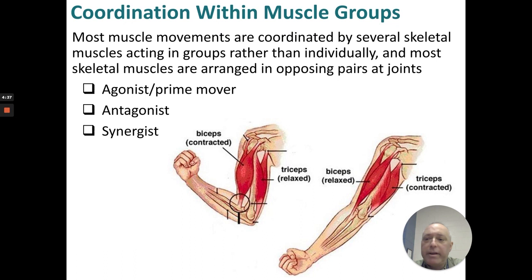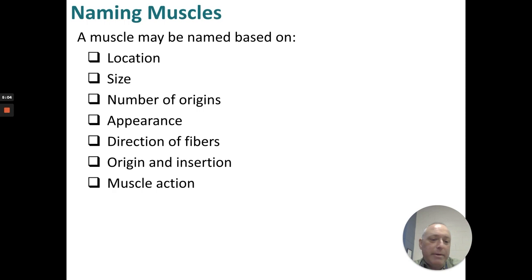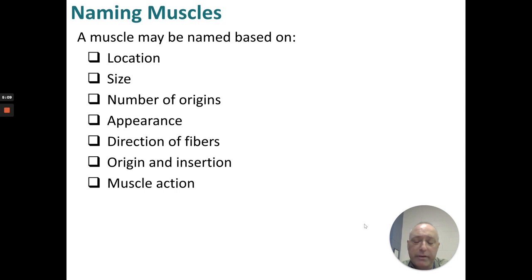Most muscle movements are coordinated with agonists, antagonists, and synergists. For example, the biceps brachii — when it is contracted, the triceps is relaxed, allowing for flexion. When the triceps contracts and the biceps relax, you get extension of your forearm. Muscle naming is complex. It can be determined by location, size, number of origins, appearance, direction of fibers, origin and insertions, and muscle action.